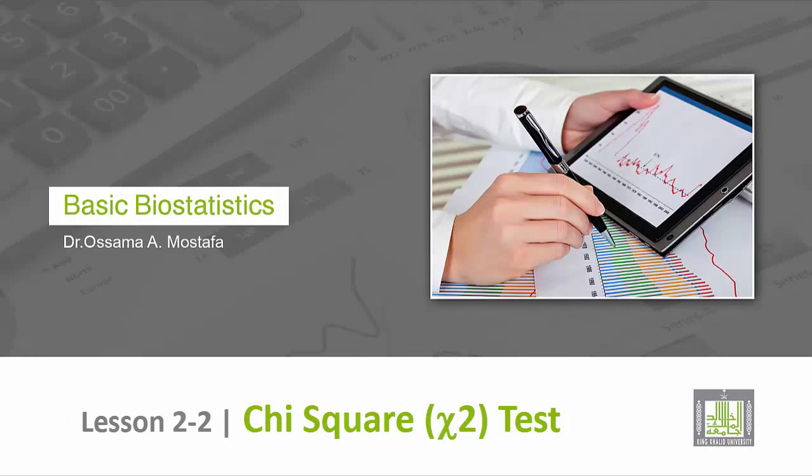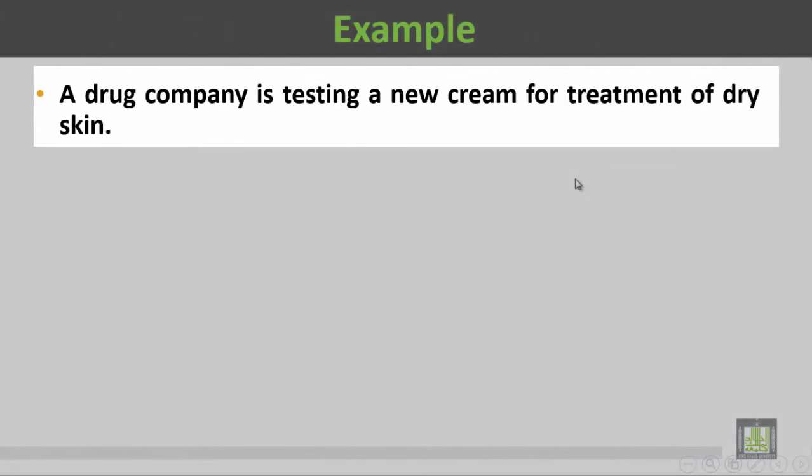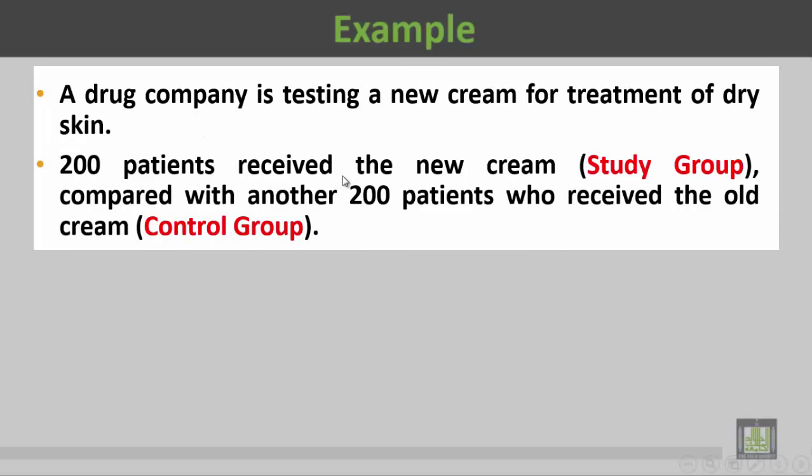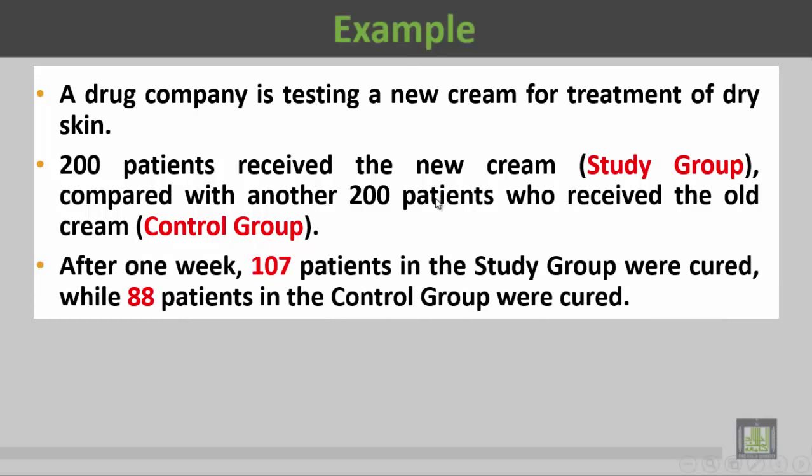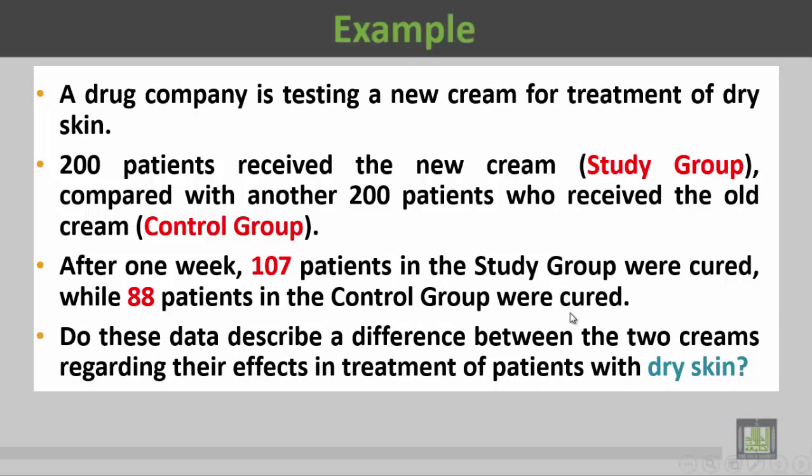Let's have an example on chi-square. A drug company is testing a new cream for the treatment of dry skin. 200 patients received the new cream (that's the study group), compared with another 200 patients who received the old cream (that's the control group). After one week, 107 patients in the study group were cured while 88 patients in the control group were cured. Do these data describe a difference between the two creams regarding their effects in the treatment of patients with dry skin?